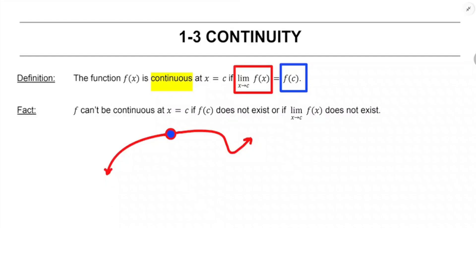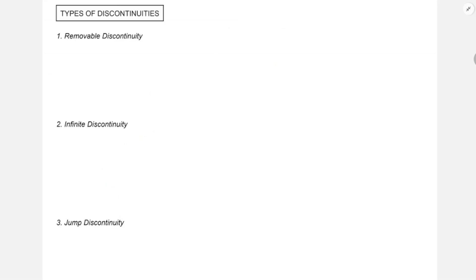A continuous function can be drawn in one stroke of the pen without lifting the pen off the paper — which is somehow a really good definition, but also not that mathematical. We're not going to get into the epsilons and deltas of continuity in this video; if you're interested in that, you can check out the multivariable calculus playlist. So let's talk about types of discontinuities. In this class, there are three types we need to be aware of, and they boil down into removable versus non-removable.